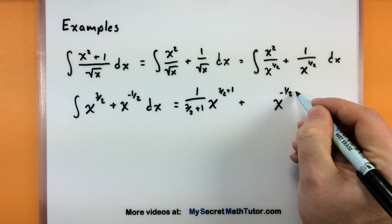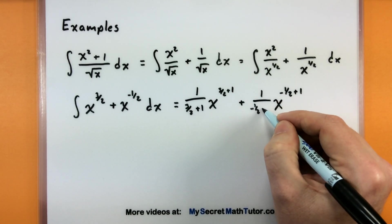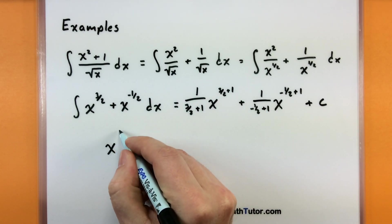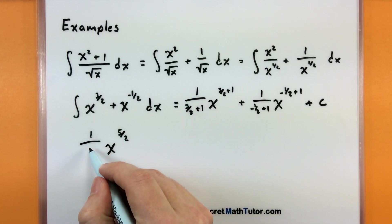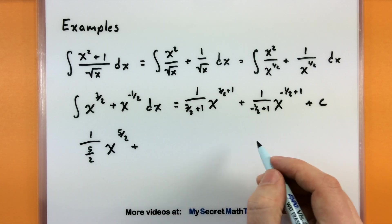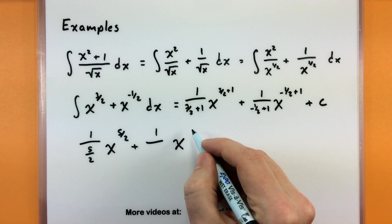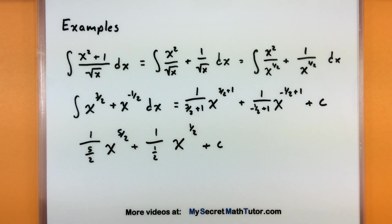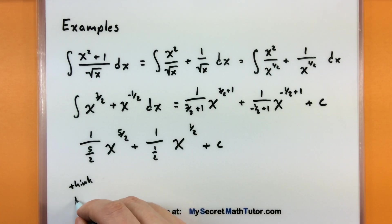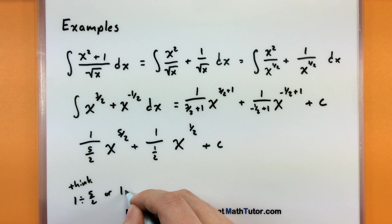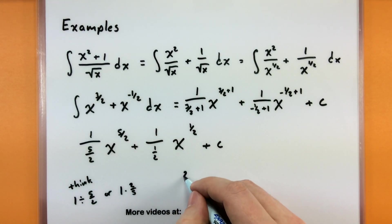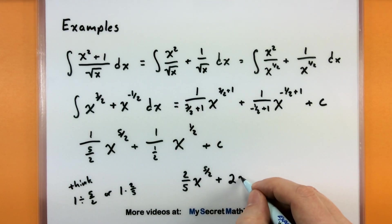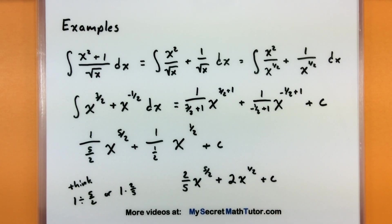So for the first term: three-halves plus one gives five-halves, and we divide by five-halves. For the second: negative one-half plus one gives one-half, and we divide by one-half. We put a plus C. Cleaning up — when dividing by a fraction we flip and multiply — one divided by five-halves is two-fifths, so this becomes two-fifths times x to the five-halves plus two times x to the one-half plus C. I had to manipulate this so I was only using the anti-derivative of things that were added together, using the power rule.